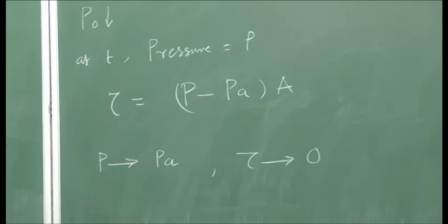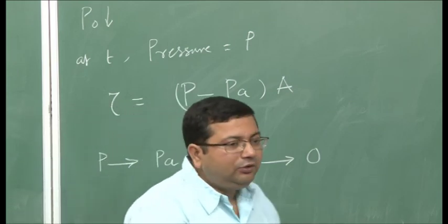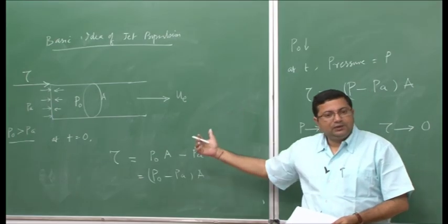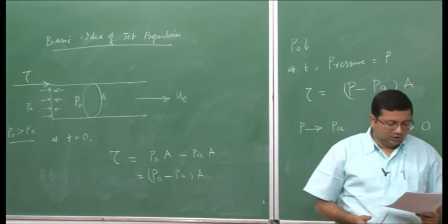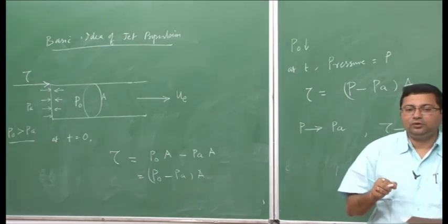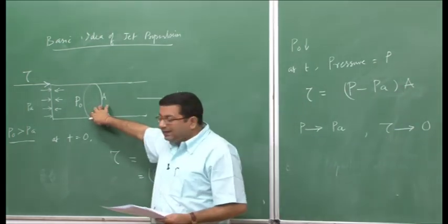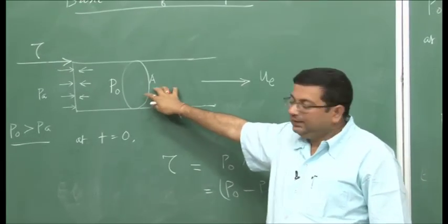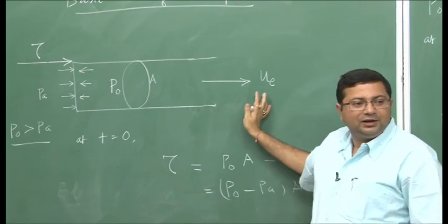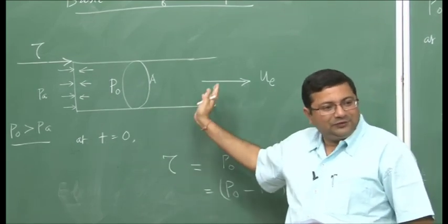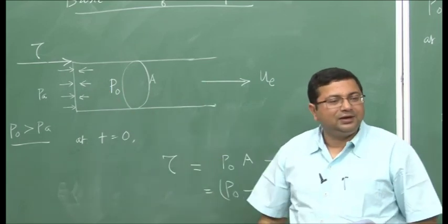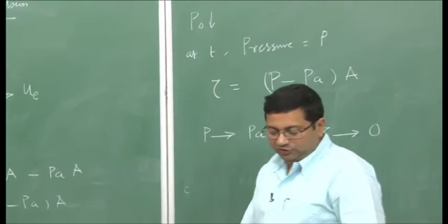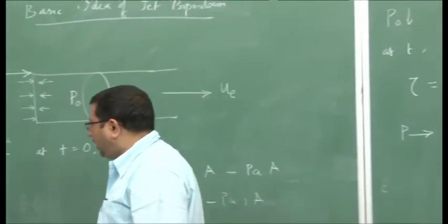As soon as the system reaches mechanical equilibrium, the pressure equals atmospheric pressure and thrust production stops — the vehicle will stop moving. To maintain continuous motion, we have to somehow maintain a higher pressure inside. If we can maintain high pressure inside and lower pressure outside, there will always be a pressure differential to produce thrust and sustain motion.